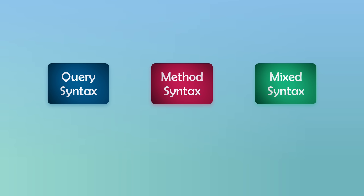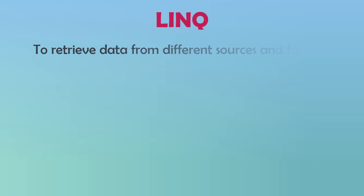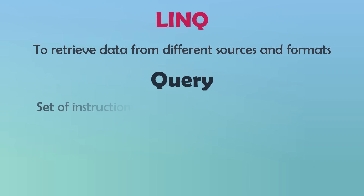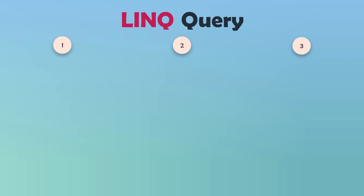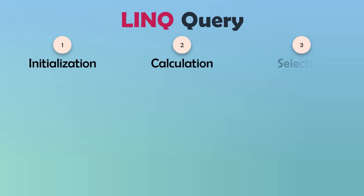Before we start talking about the three ways, let's do a recap about LINQ. What does it mean and what are the requirements for a LINQ query? LINQ is to retrieve data from different sources and formats. It's to transform a data source to a new form after doing some calculations or filtering the data. A query is a set of instructions applied to a data source to perform certain operations. A LINQ query consists of three parts: initialization, calculation, selection.